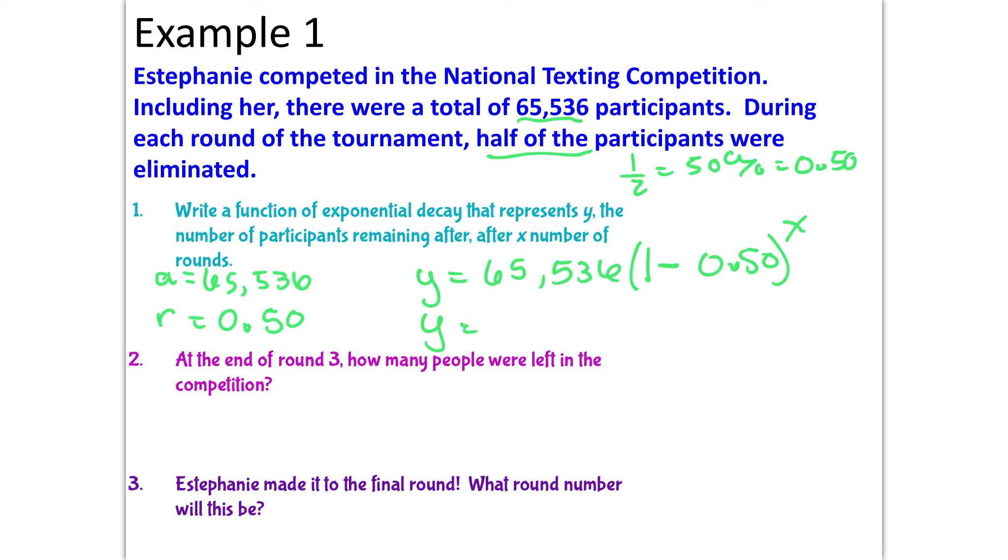We can simplify that as y equals 65,536 times 0.50 to the x power. Then it's asking, at the end of round 3, how many people were left in the competition? So that 3, round 3 is our time interval. We're going to do y equals 65,536 times 0.50 to the 3rd power. Putting that in my calculator, I have y equals 8,192 people left.